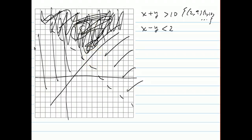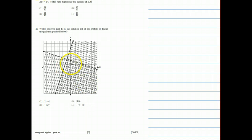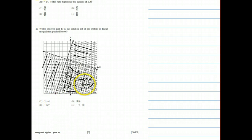Now we apply this to the actual question. They give us the entire graph: there's horizontal shading on one side, somewhat vertical shading on another, and over here there's both kinds of shading — that doubly-shaded portion is the solution set. Testing the answer choices, the point (1, -4) is in that doubly-shaded area.